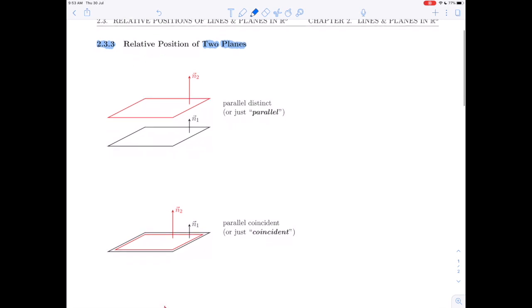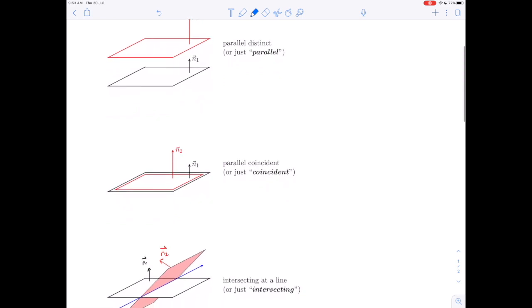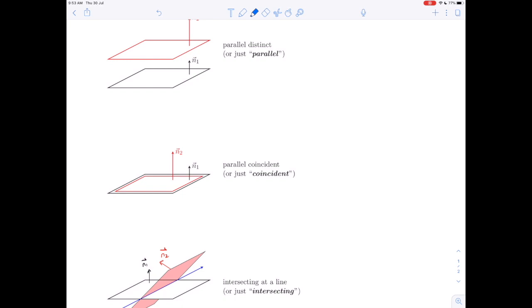So there are three possibilities for the relative position of two planes. They can be parallel distinct, or just parallel. They can be parallel coincident, so that they actually occupy exactly the same points in space, in which case we'll call them just coincident. And they can be intersecting at a line. So that is something that might be new to you: two objects that intersect at something other than a point. So planes in three-dimensional space, if they intersect, they will intersect at a line. That's if they're not coincident, in which case we will call them just intersecting. And you can sort of see a diagram here that if planes cut each other, they will cut each other at a full line.